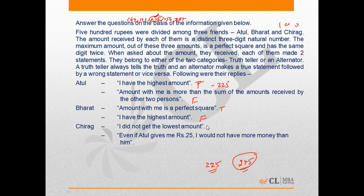Chirag's first statement is 'I did not get the lowest amount' — we cannot comment on this yet. His second statement is 'Even if Atul gives me 25 rupees, I would not have more money than him.' Out of the 275 remaining, the maximum Bharat or Chirag can receive is 175. Even if 25 is taken from 225 and added to 175, both amounts would be equal, so Chirag's second statement is true.